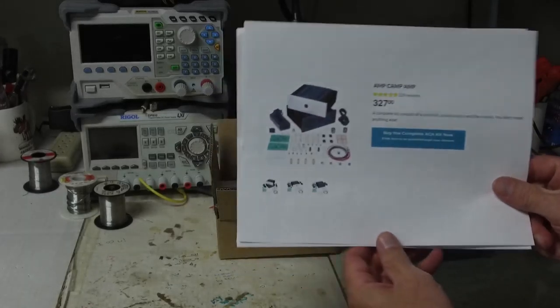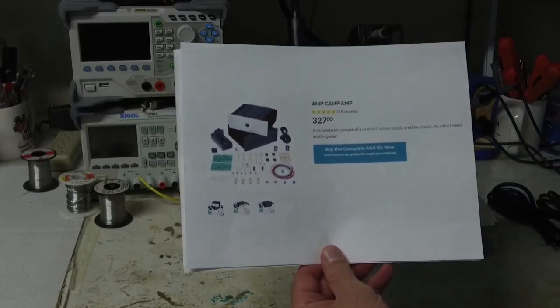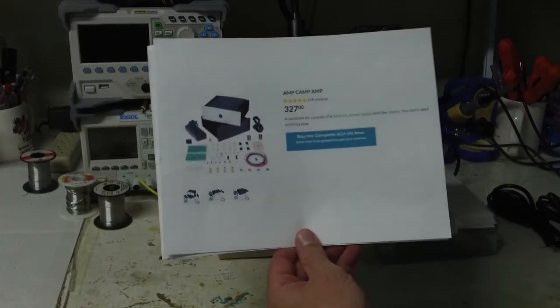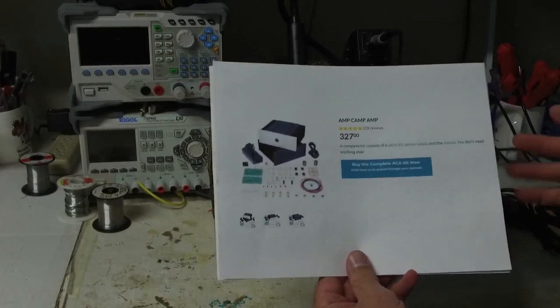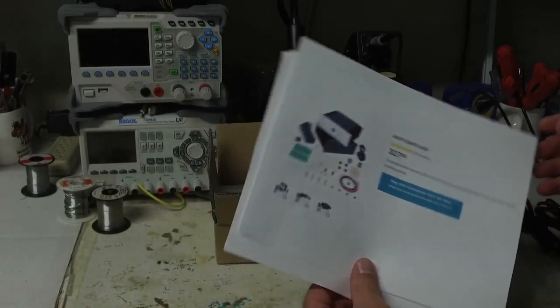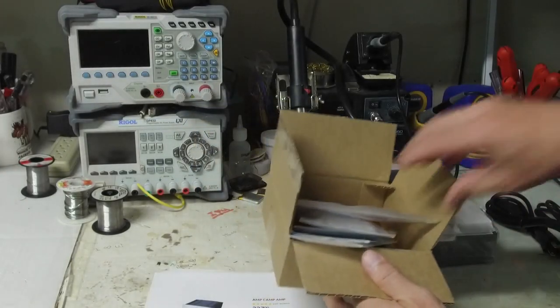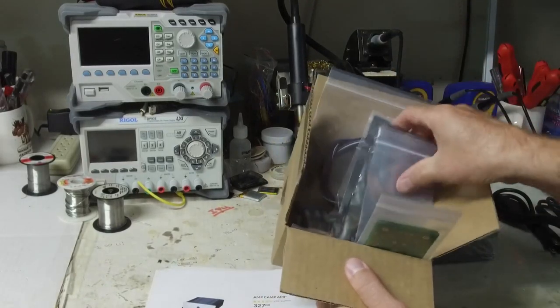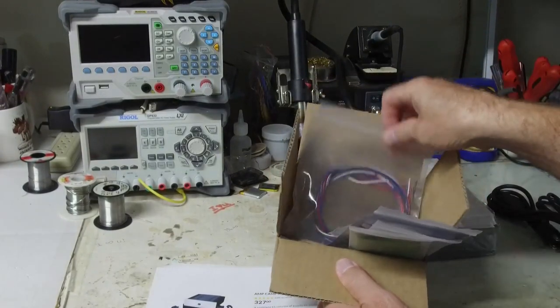Well, here we go. I just purchased an Amp Camp Amp from DIY Audio. The total price was $327, and that includes all the electronics, the circuit boards, and the chassis. Here are the components, the electronic components, and circuit boards. This is how it arrived - shipping and packaging looks good.